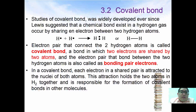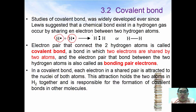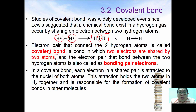We're going to continue with the covalent bond. Covalent bonding was widely developed since Lewis suggested that a chemical bond exists in hydrogen gas by sharing an electron between the two hydrogen atoms. Since each hydrogen has only one electron, in order to achieve duplet, both hydrogens share one of their electrons, eventually forming a sharing pair of electrons — also called a covalent bond — where two electrons are shared by two atoms. This attraction holds the two atoms together and is responsible for the formation of covalent bonds.